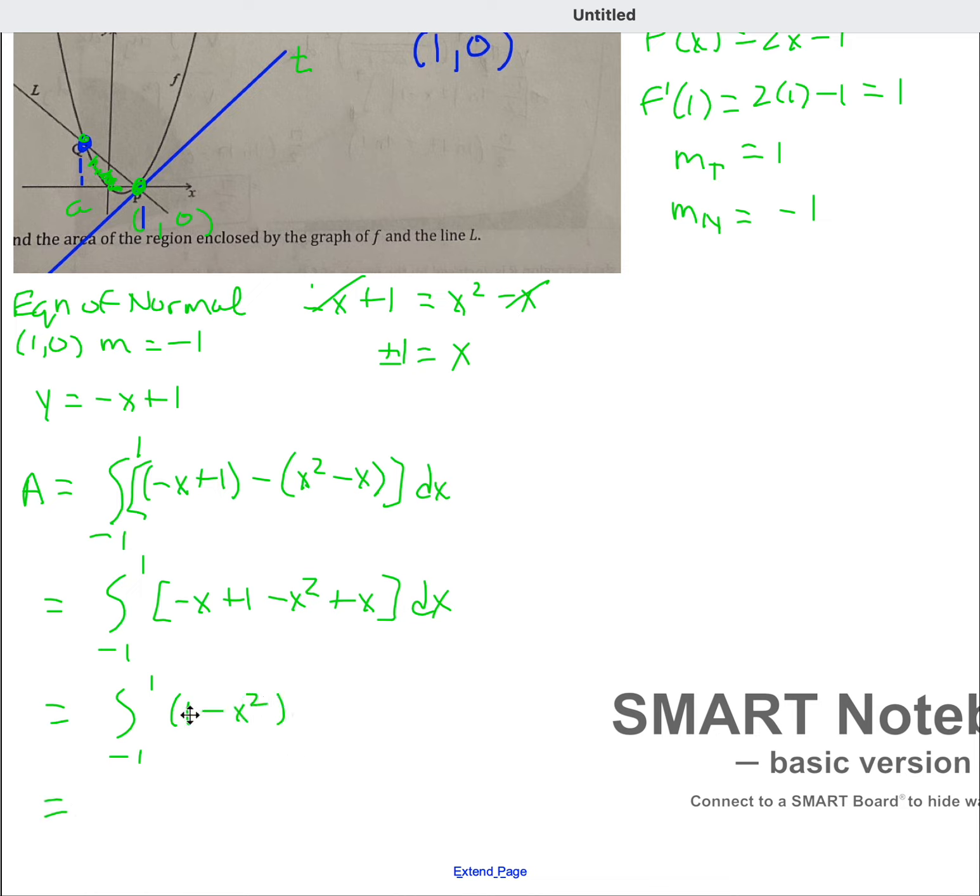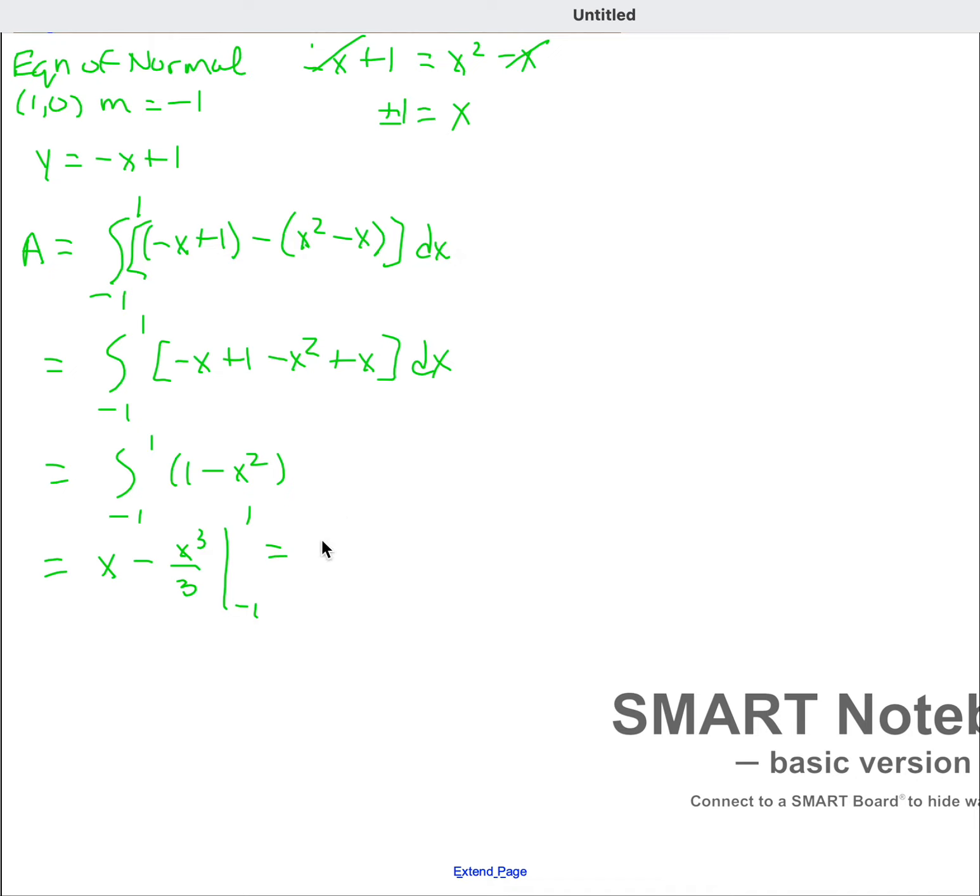So here we go. We're going to integrate. Integral of 1 is x minus x cubed over 3, evaluated from negative 1 to 1. So that will be equal to, plug in 1 would be 1 minus 1 third minus, be sure to put parentheses, negative 1. So negative 1 cubed is negative 1. Negative times a negative is a positive, so that's plus 1 third.